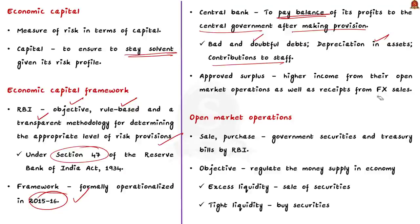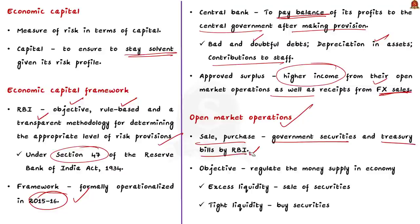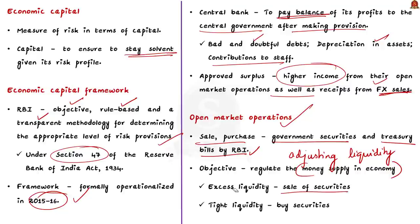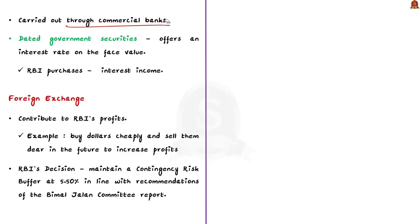Economic capital is a measure of risk in terms of capital — specifically the amount of capital an organization needs to ensure it stays solvent given its risk profile. The RBI developed an Economic Capital Framework to provide an objective, rule-based, and transparent methodology for determining the appropriate level of risk provisions, using Section 47 of the Reserve Bank of India Act 1934. This framework was developed in 2014–15 but formally operationalized only in 2015–16. As per this provision, the central bank must pay the balance of its profits to the central government after making provisions for bad and doubtful debts, depreciation in assets, and staff contributions.